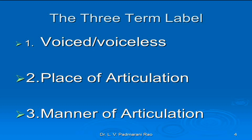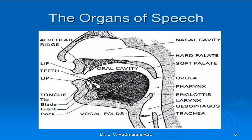These three aspects are useful for us to describe the three-term label of a consonantal sound. Before going into the discussion of this, the organs of speech is a must. The organs of speech present in the oral cavity constitute the articulatory system. The oral cavity can be conveniently divided into the organs present in the upper jaw and the organs present in the lower jaw. As the upper jaw is fixed, these organs are called passive articulators, while the lower jaw is movable and so its organs are called active articulators.